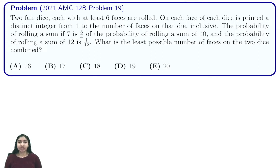It tells us that two fair dice, each with at least six faces, are rolled, where the faces on the dice are between one and the number of faces. The probability of rolling a sum of seven is three-fourths the probability of rolling a sum of ten, and the probability of rolling a sum of 12 is one over 12. And we're trying to find the least number of faces on the two dice combined.